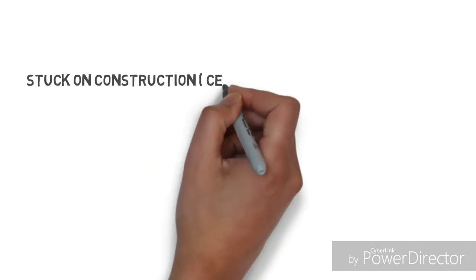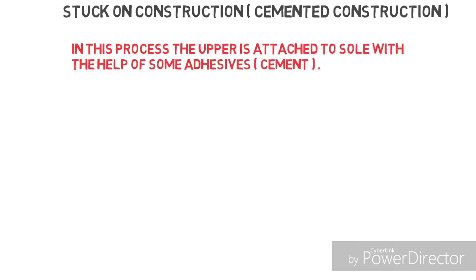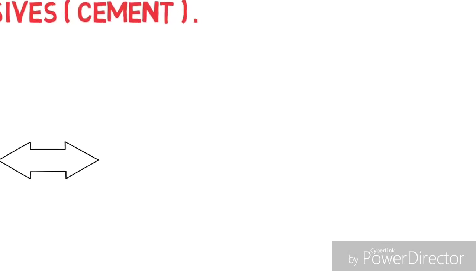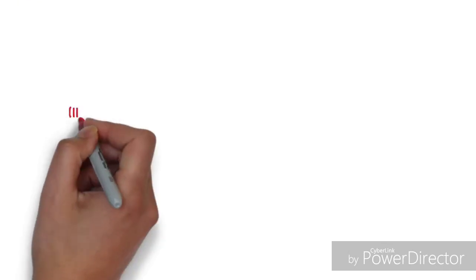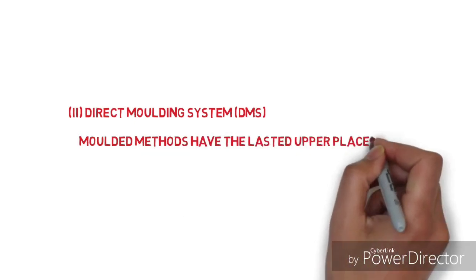First one is stuck on construction or cemented construction. In this process, the upper is attached to the sole with the help of adhesives or cement. Direct molding system (DMS): In DMS, the lasted upper is placed in a mold and the sole is formed around it by injecting liquid synthetic soling material.